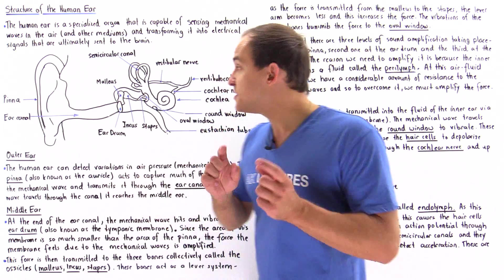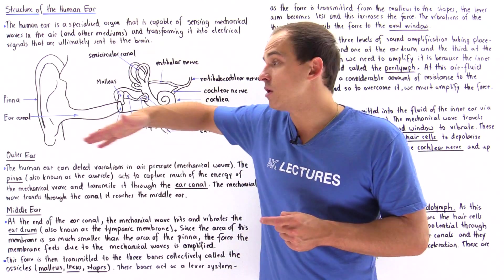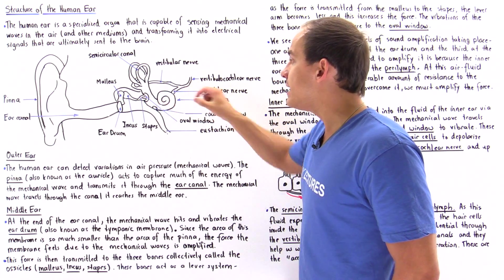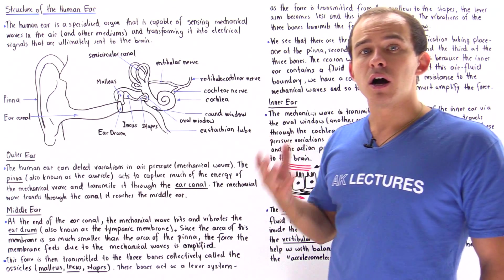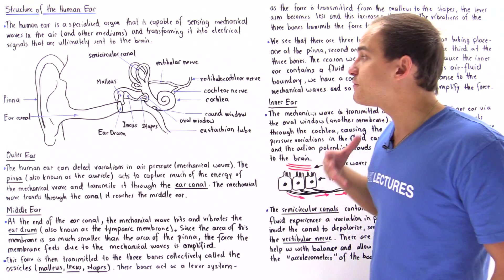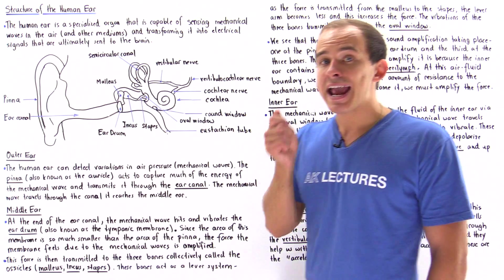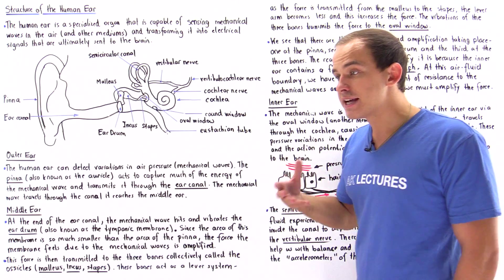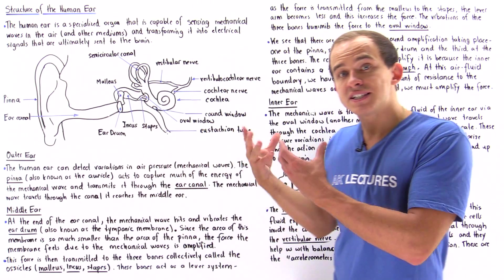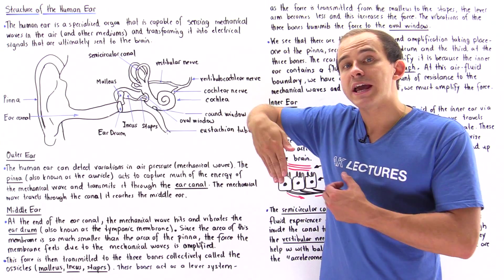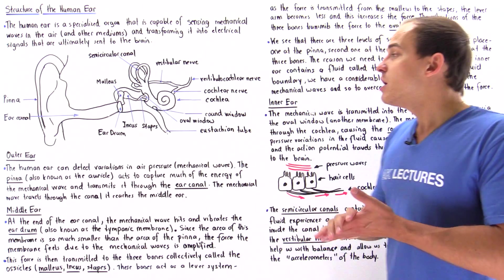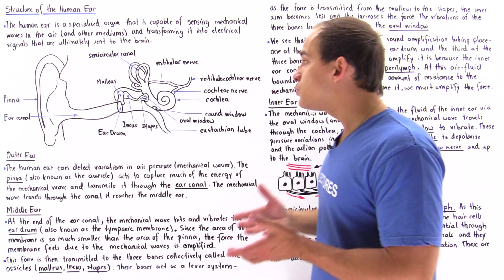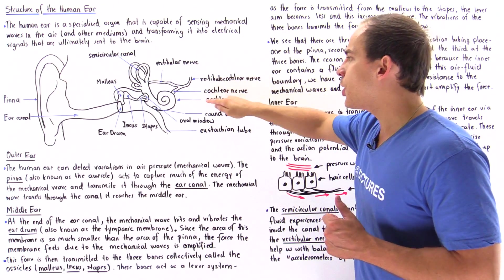We are able to hear well because these membranes are flexible and able to oscillate back and forth. As the pressure wave is carried through the cochlea, inside it we have a region known as the organ of Corti. At the organ of Corti, we have specialized sensory cells known as hair cells, and these hair cells contain extensions known as microvilli. These microvilli extensions are capable of responding to the pressure waves, and as they vibrate, they depolarize the membrane of the hair cells. When the hair cells depolarize, they create an action potential — an electrical signal.